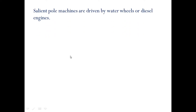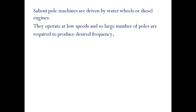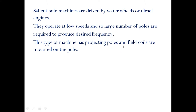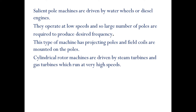Salient pole machines operate at low speeds, around 1500 RPM, and require a large number of poles to produce the desired frequency, calculated using Ns = 120f / P. They have projecting poles with field coils mounted on the poles. Cylindrical rotor machines are driven by steam turbines and gas turbines, which run at very high speeds.